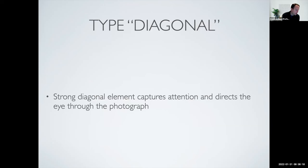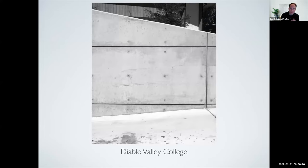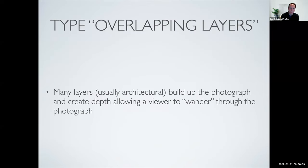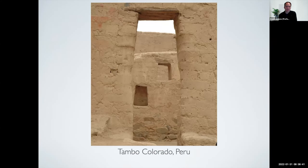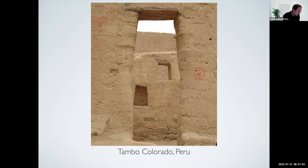We also have the diagonal compositional technique, where there's a strong diagonal element in a particular image that helps to frame the scene. This example is actually on the DVC campus with those strong diagonals. Another example uses train tracks as the strong diagonal. Overlapping layers is when you have multiple layers stacked on top of each other. This example is from Tambo Colorado, the Incan city in Peru — we've got a first layer in front of a second piece, which is in front of a back wall, so those are three layers. In another image, we walk through level one at the ground, level two the small piece, level three the pond, level four the beach and trees, level five the field, level six the water, and level seven the horizon — all those overlapping layers walk us back through the composition.